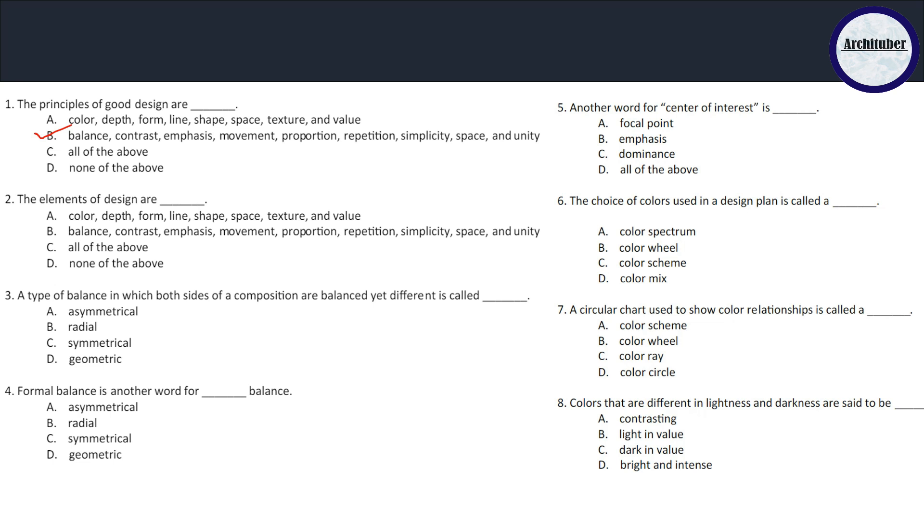The elements of design are color, depth, form, line, shape, space, texture and value, so A is the correct answer. Question number three: a type of balance in which both sides of compositions are balanced yet different - the composition is balanced but there are different patterns, so it is asymmetrical balance.